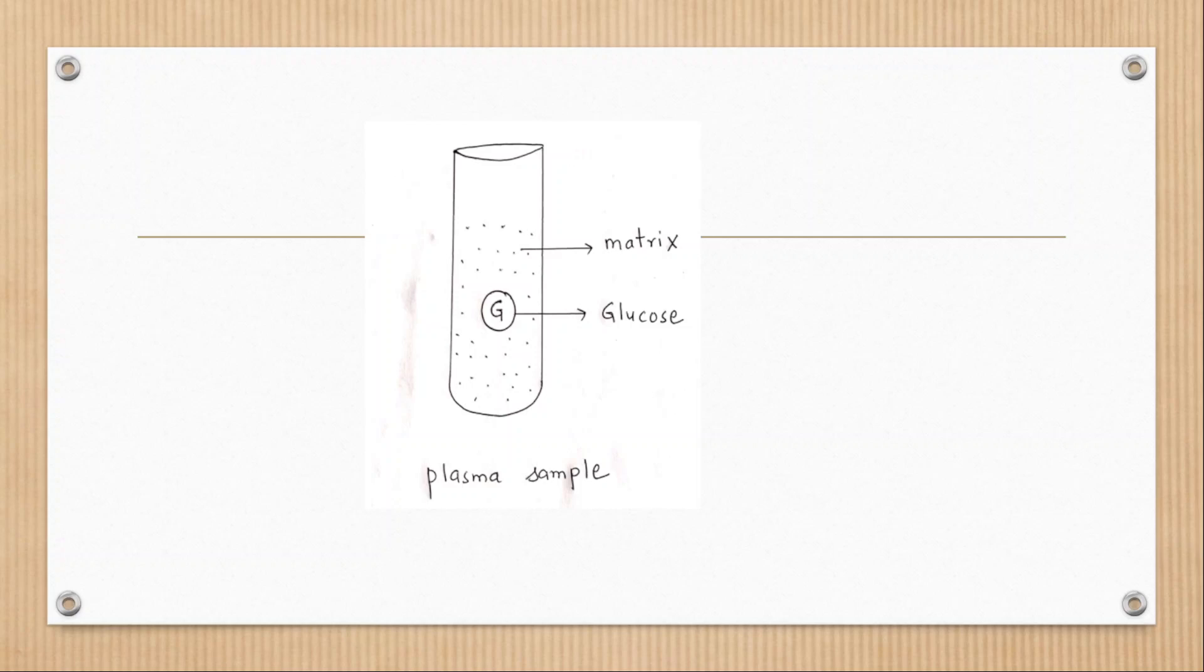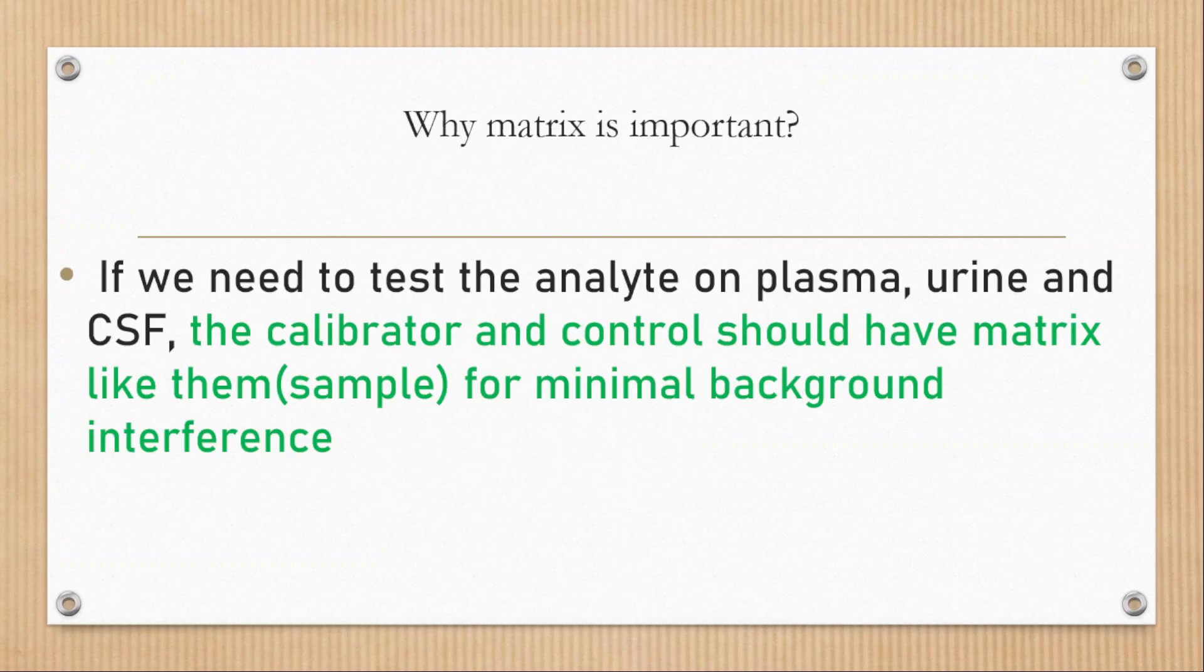Now, why matrix is important? If we need to test the analyte on plasma, urine, CSF, and other body fluid, the calibrator and control should have matrix like sample for minimal background interference from test method and machine.